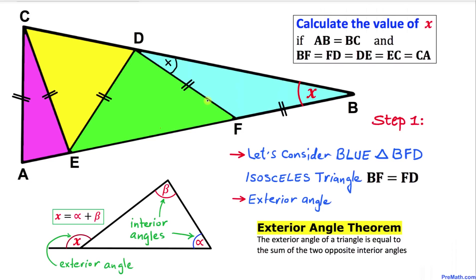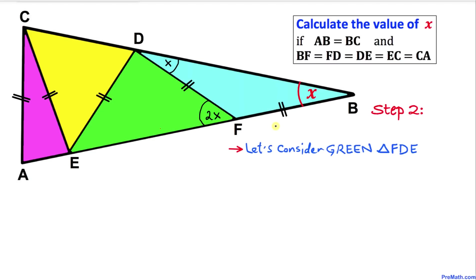So in our example, this is going to be our exterior angle for these two opposite interior angles, and this exterior angle is going to be X plus X, which is the same as 2X.